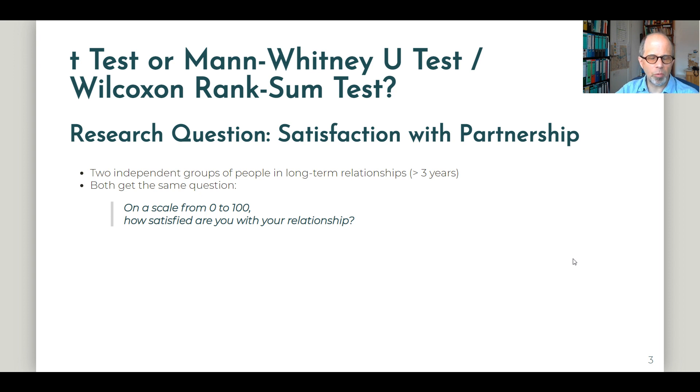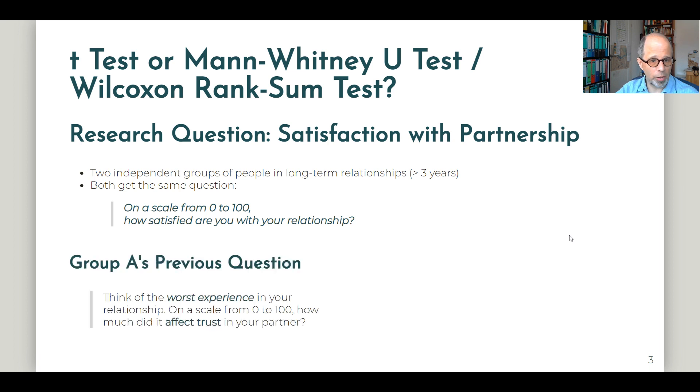The difference between the two groups is which question they were asked previously. So we can call this framing. We create a specific context by asking a question before we ask about satisfaction with a relationship. Group A is previously asked: think of the worst experience in your relationship. On a scale from 0 to 100, how much did it affect trust in your partner?